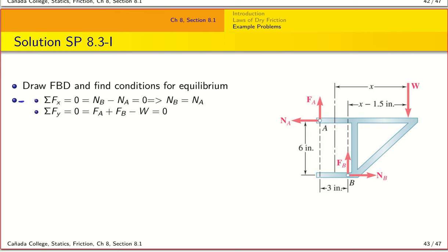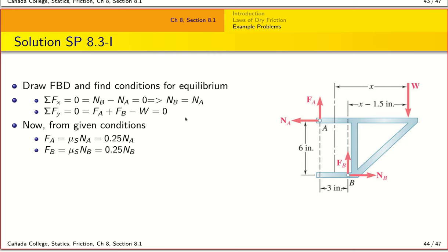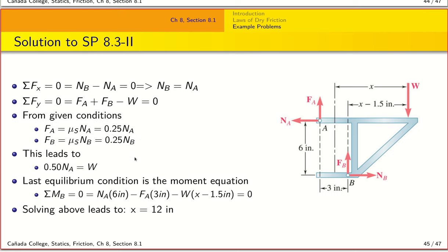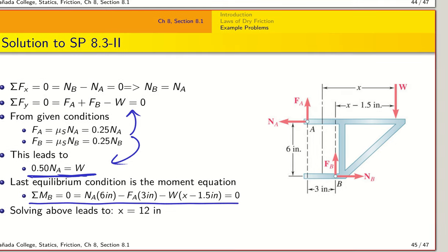Going through the x and y equilibrium conditions: sigma Fx = 0 gives NB = NA; sigma Fy = 0 gives FA + FB - W = 0. From the impending motion condition, FA = μs · NA and FB = μs · NB = 0.25 · NA and 0.25 · NB. Substituting back gives W = 0.5 · NA (equivalently 0.5 · NB).